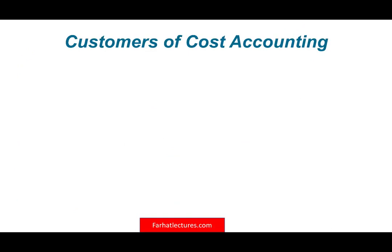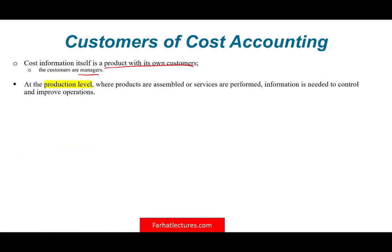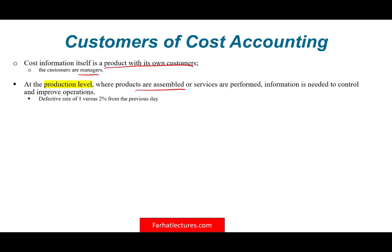So who are the customers of a cost accounting system? It's the managers of the company — the cost information itself is a product with its own customers, and those are the managers at all levels. At the production level where the product is assembled, you need cost information to control and improve operations, like the defective rate. If yesterday it was 2% and today it's 1%, we need to know this information because it helps the production-level manager adjust the production process.